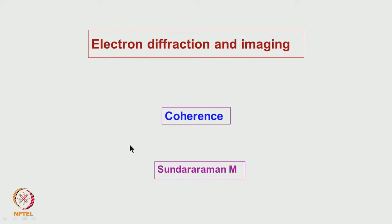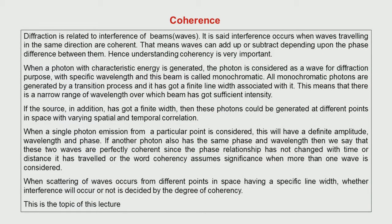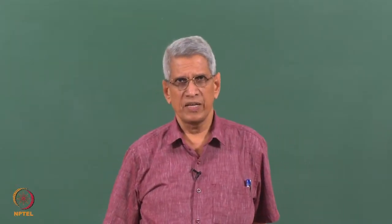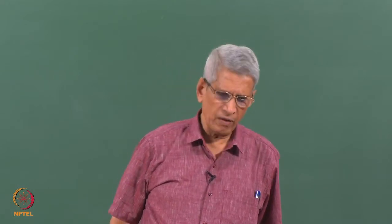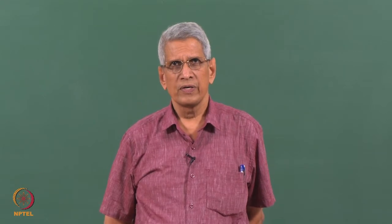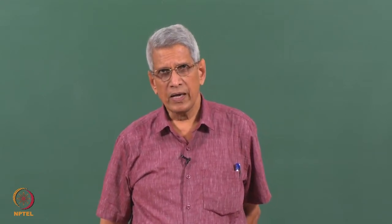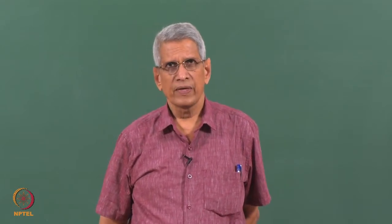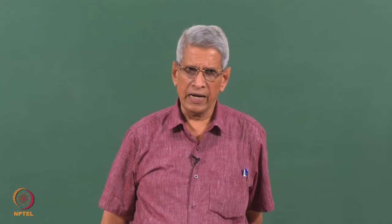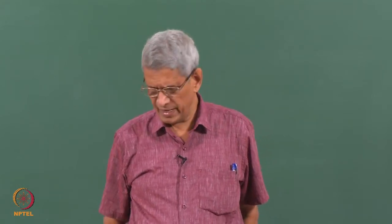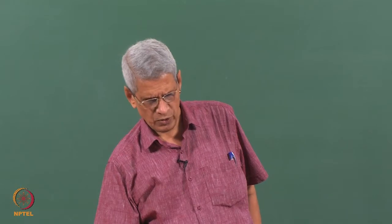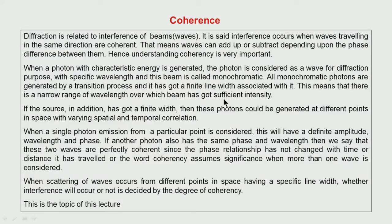What do we mean by coherence? Once we understand this, we can tell what is the condition under which diffraction will take place, or what is the condition under which interference will take place. What we mean by coherence is that if a wave has the same frequency as well as the same phase relationship, or there is a definite lag or lead of phase, then we say that the beam is coherent. In such cases the amplitude of the waves can be added to find out the net amplitude of the resultant wave.